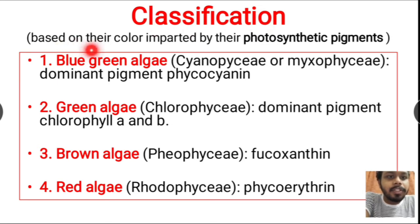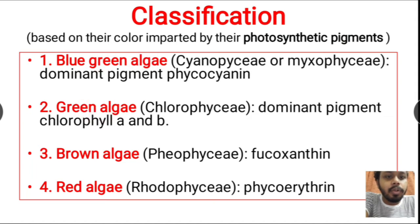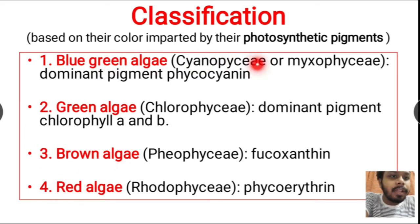The first classification is based on their color, which is determined by their photosynthetic pigments. Based on the photosynthetic pigments, algae are classified into four groups: blue-green algae, green algae, brown algae, and red algae. Blue-green algae are the cyanophyceae or cyanobacteria — they are prokaryotic algae.